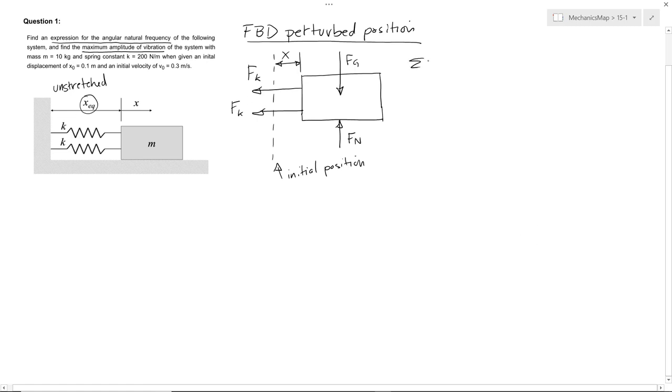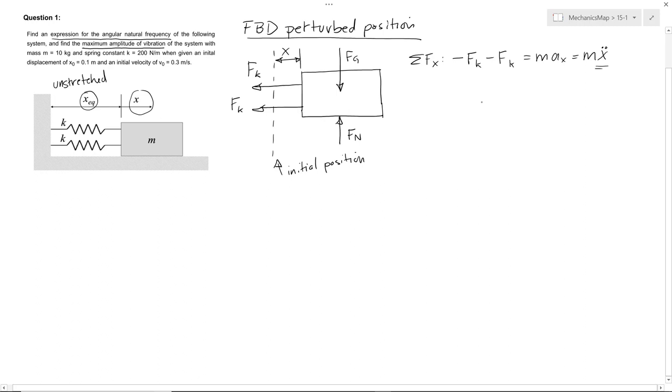Now we write our Newton's second law equation, sum of forces in x. So minus fk, minus fk, equals max equals mx double dot. And we're going to put our acceleration in x in the positive x direction. We're just assigning it that way. That's going to help us work it out, get the right signs on all our terms. So we know that fk is going to be equal to the spring constant k times x.